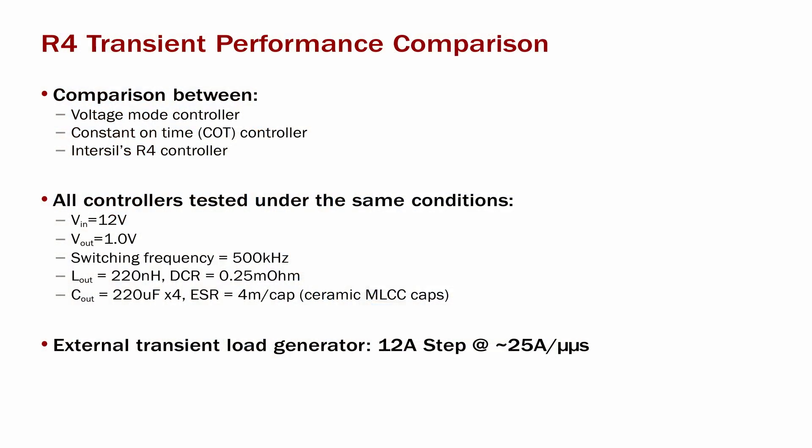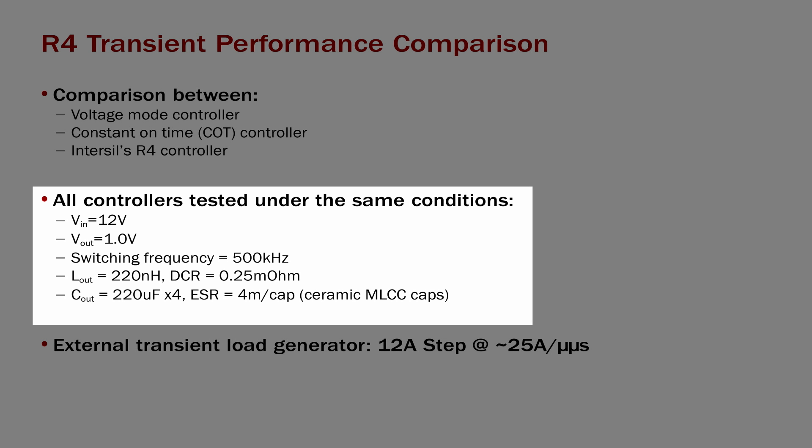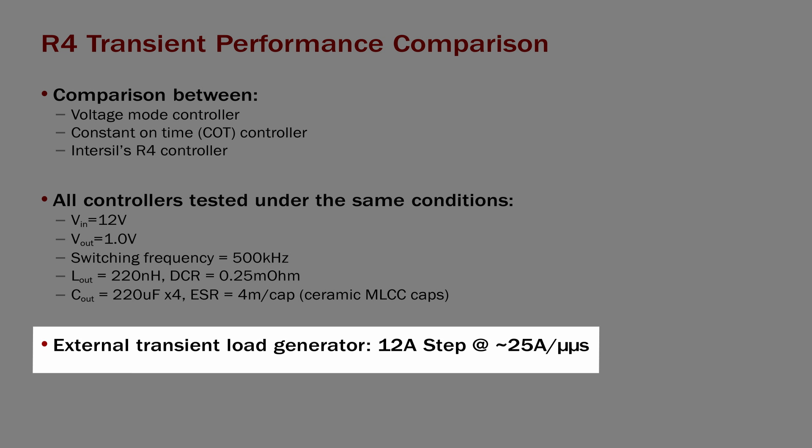To really showcase the R4 modulator we did a comparison with a voltage mode control loop and a constant on-time control loop, two very popular control loops on the marketplace. For this comparison we did 12 volt input to 1 volt output, 500 kilohertz switching frequency, same inductor, and same all ceramic output capacitance filter. The same load hitter was used to provide a 12 amp load step at 25 amps per microsecond. The only difference between the setups was the control loop, R4 versus voltage mode versus constant on-time.